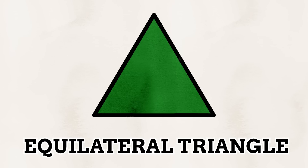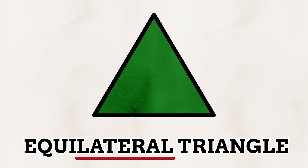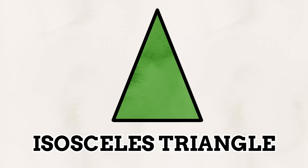In school we get taught about things like the equilateral triangle — when all three sides are equal in length. That's where the 'equal' part of 'equilateral' comes from, with the 'lateral' part coming from the word lateral, a term we use when talking about the sides of things. My favorite name for a triangle has to be the isosceles triangle, which is when a triangle only has two sides of equal length.